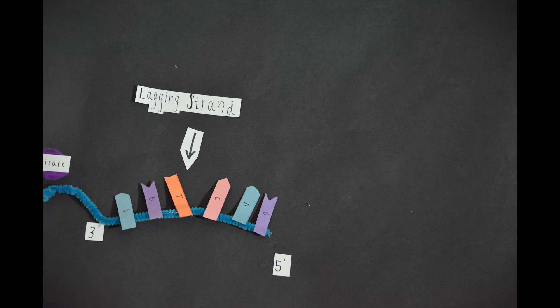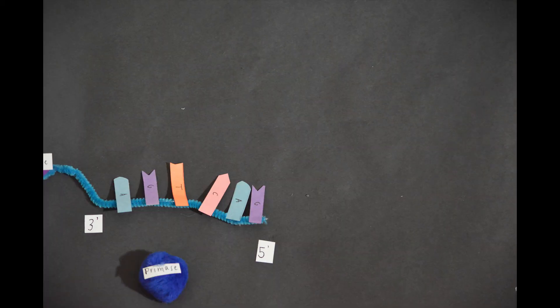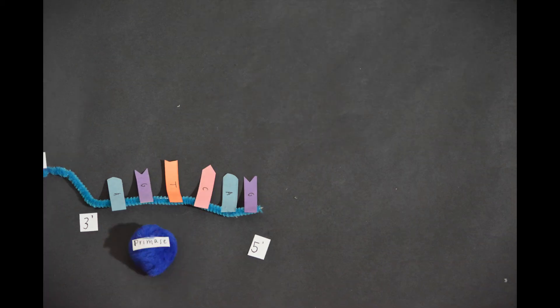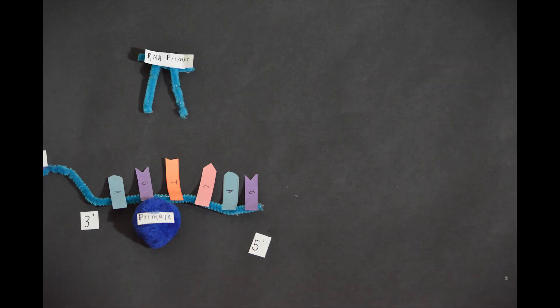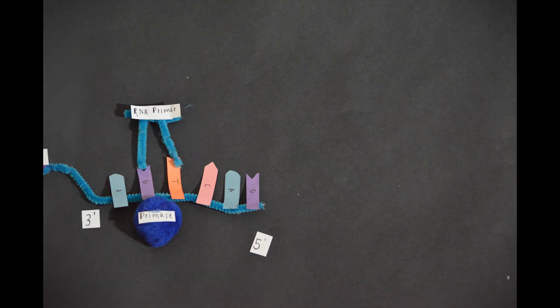The parent DNA strand on the bottom provides a template for the daughter strand, which in this case is called the lagging strand. Similarly to the leading strand, the primase comes in first as well as the RNA primer to start the process.